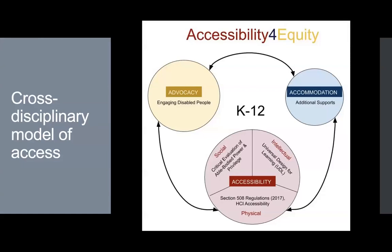The Accessibility for Equity diagram illustrates the relationships between the various constructs that comprise the framework. The overall structure and arrangement of the framework is informed by Eddie Byrne's A3 model of accessibility, the process-oriented models of access such as British Standard 8878, and the iterative design philosophy of HCI. The framework features three circles arranged equidistant from one another in a triangular configuration with semi-circular two-way arrows connecting the three elements. The three circles are labeled accessibility, advocacy, and accommodation. The two-way arrows emphasize that accessibility is an iterative, always beta process.